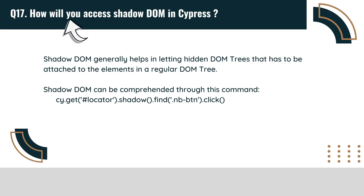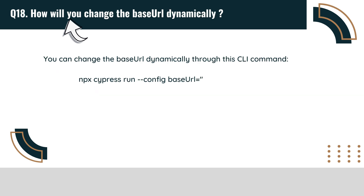How will you access Shadow DOM in Cypress? Shadow DOM generally helps in letting hidden DOM trees be attached to elements in a regular DOM tree. Shadow DOM can be accessed through the below mentioned command. You can also change the base URL dynamically through the below mentioned CLI command.